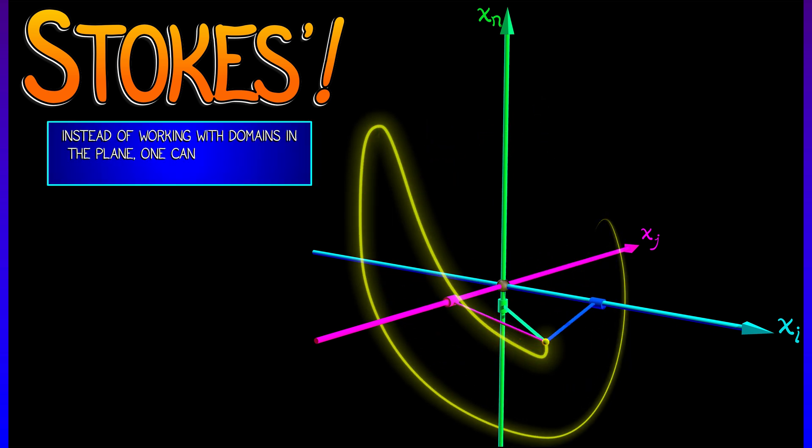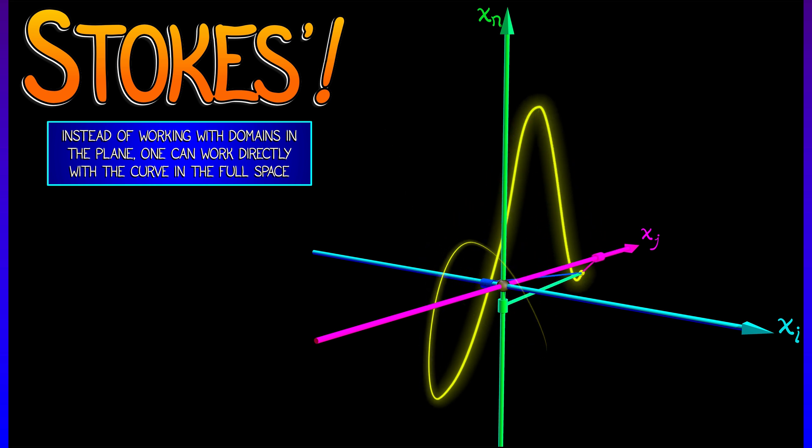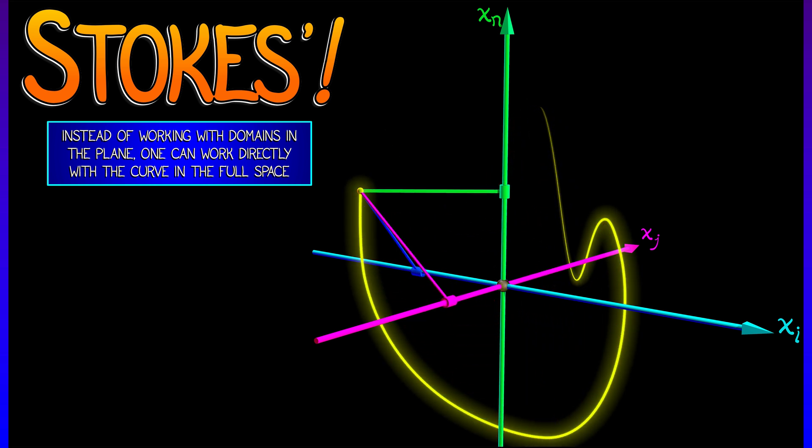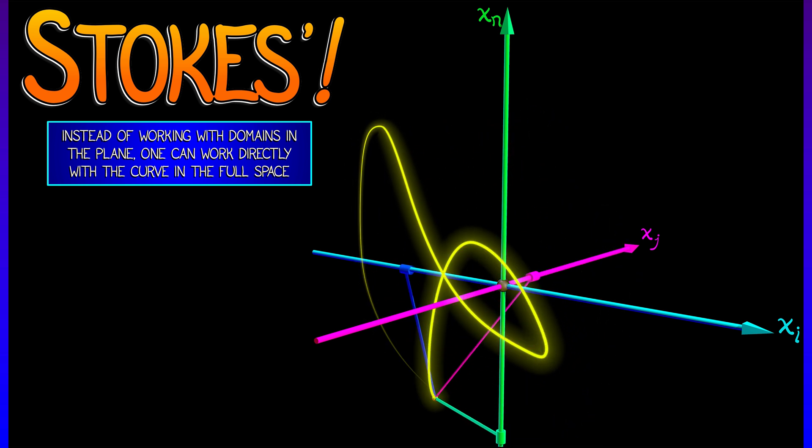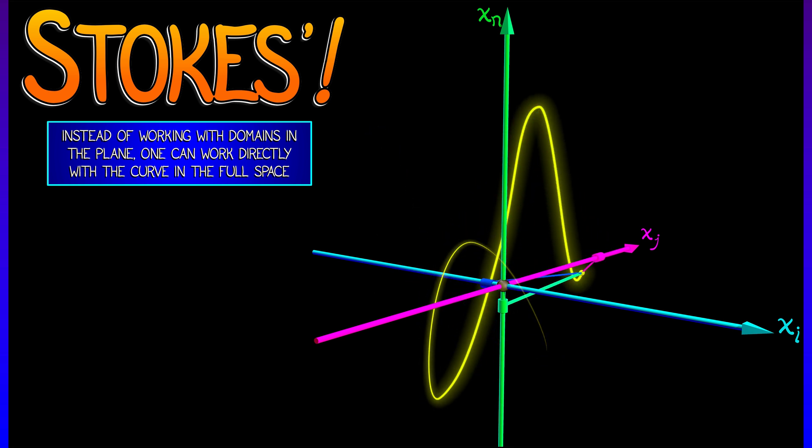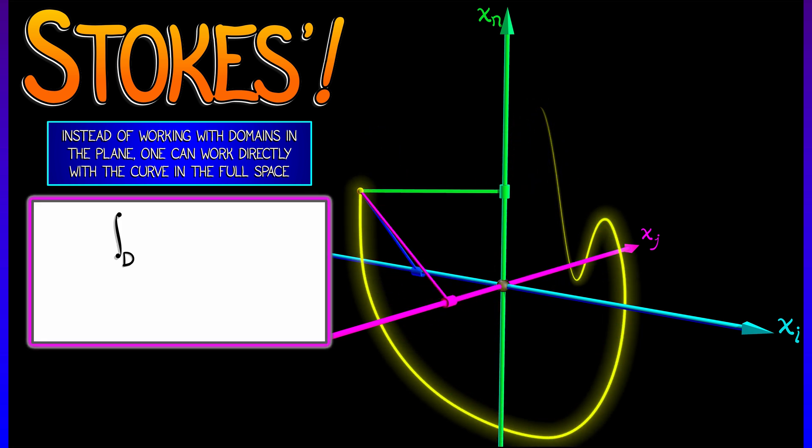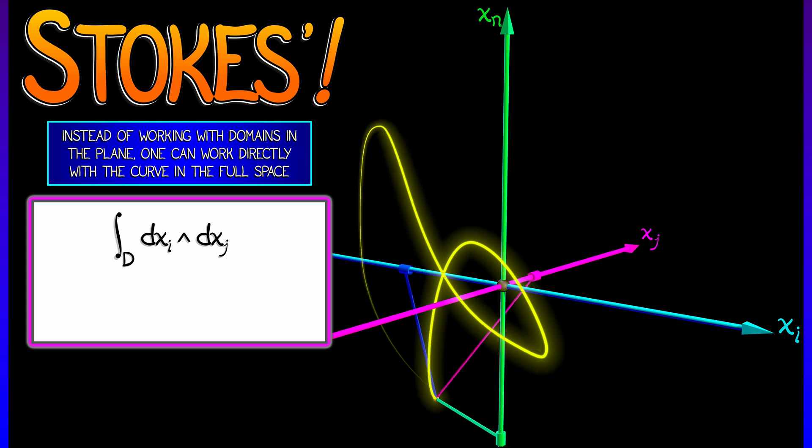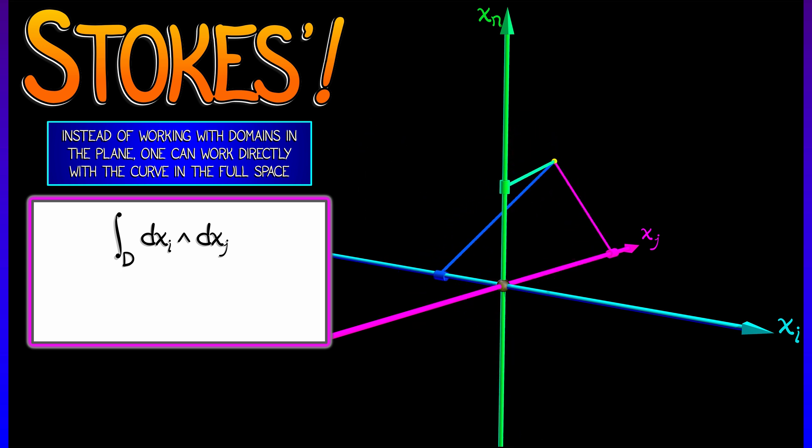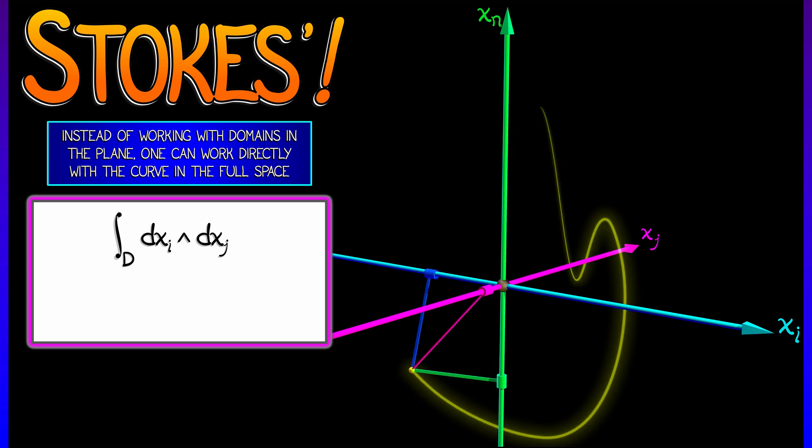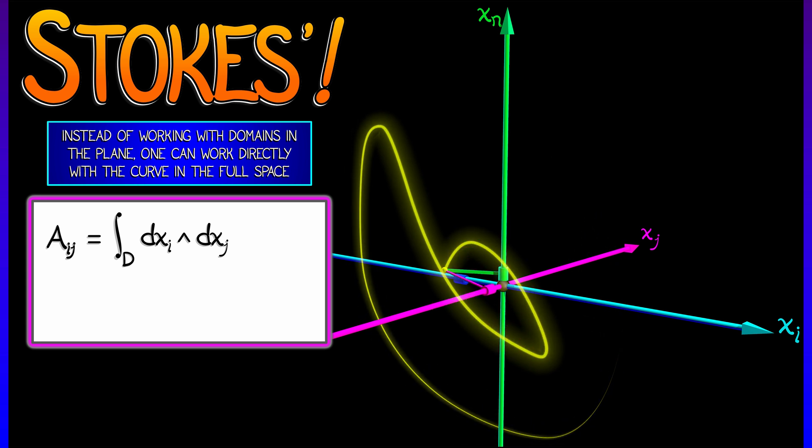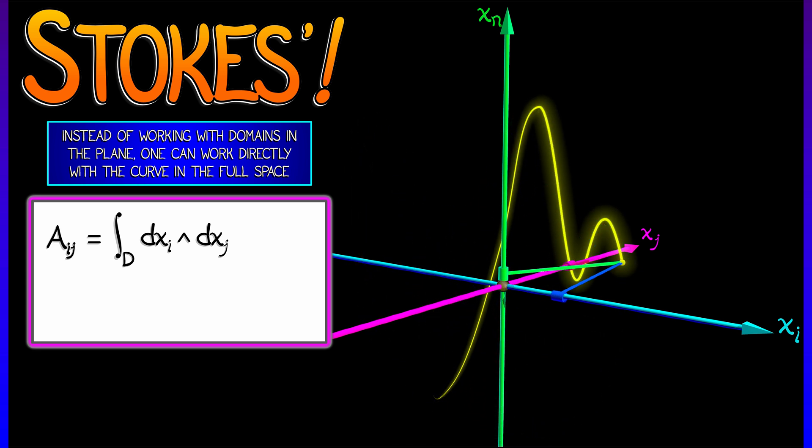Instead of trying to work with some complicated region in a plane, let's work directly in n-dimensional space. Okay, so you've got these n signals, let's consider the two-form, dxi wedged dxj. Now, we've got to integrate that over some sort of two-dimensional region d. Let's call that term a sub ij.